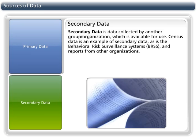Secondary data is data collected by another group or organization, which is available for use. Census data is an example of secondary data, as is the Behavioral Risk Factor Surveillance Systems, BRFSS, and reports from other organizations.